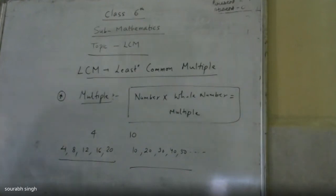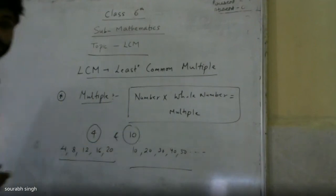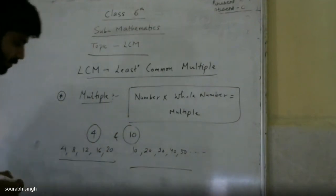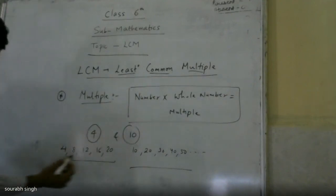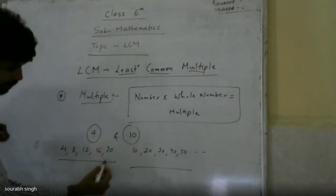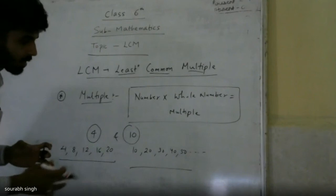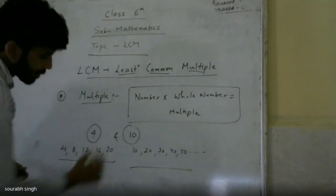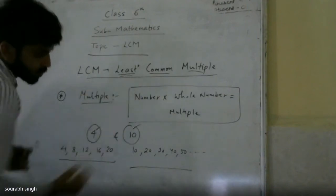So we have to find the LCM of 4 and 10. What is the LCM of 4 and 10? LCM means least common multiple. That is, what is the common multiple and which one is the least? There are many common multiples between any two numbers, and we have to write the least one.